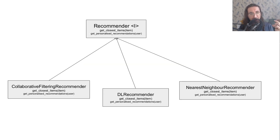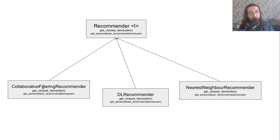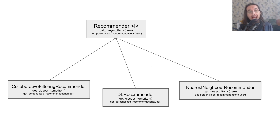Let's look at what we've seen in a simple diagram. Up here we have the Recommender interface with two abstract methods, and below we have the three concrete recommenders: CollaborativeFilteringRecommender, DLRecommender, and NearestNeighborRecommender. All three implement both abstract methods from Recommender, but as we saw, we have an issue with get_personalized_recommendations for NearestNeighborRecommender. How do we solve this?